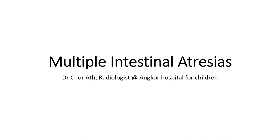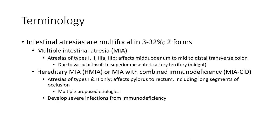Hello everyone. Today I am going to show you about multiple intestinal atresias. Intestinal atresias occur in three to thirty-two persons per two forms. Multiple intestinal atresias — types T1, T2, T3A, and T3B — affect mid-duodenum to mid-to-distal transverse colon due to the vascular supply of the superior mesenteric artery.